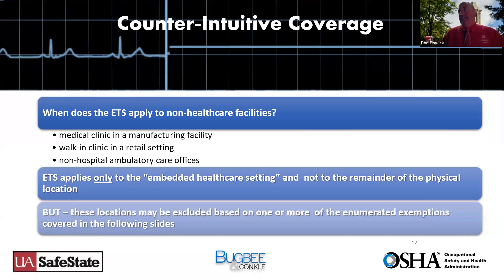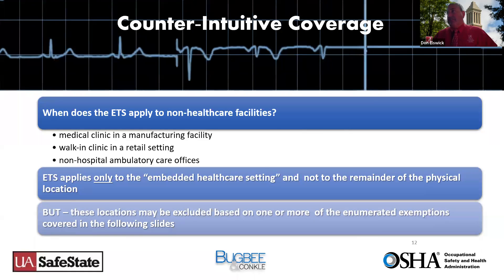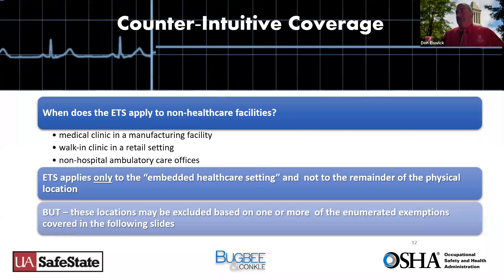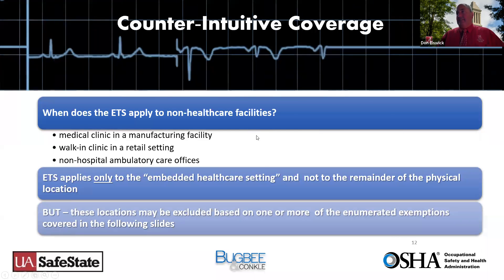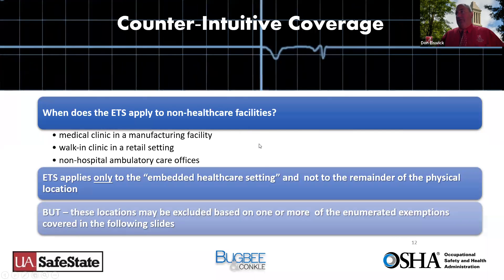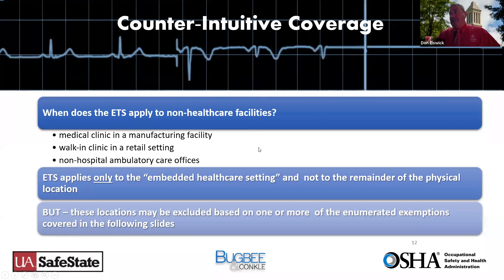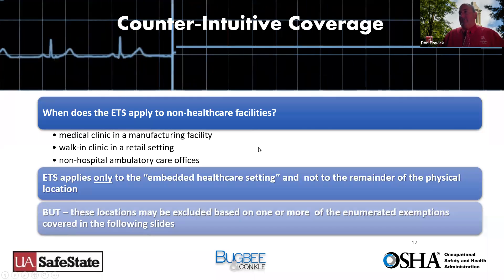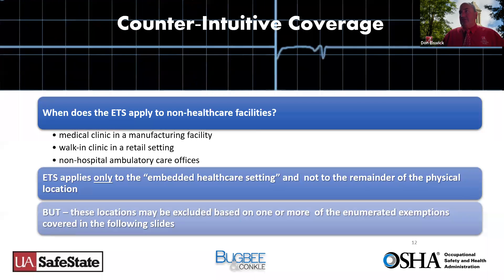There is a great flowchart on the OSHA webpage that we'll provide afterwards. Some of the affected workspaces are listed on the right side of the slide, including support services and how they're defined. When does the emergency temporary standard, or ETS, apply to non-healthcare facilities? That includes medical clinics in a manufacturing setting — a lot of people have asked questions about what is covered there.